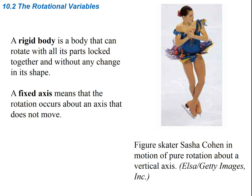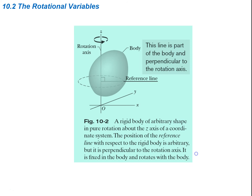To simplify things, we're going to assume that our rotating objects are rigid, meaning they're not deforming as they rotate, and that rotation occurs about some fixed axis that is not moving. A rigid body of arbitrary shape — shown here by this egg shape — is in pure rotation about the z-axis of a coordinate system. The z-axis here is straight up on the page, with x and y axes shown below.